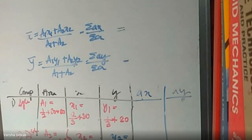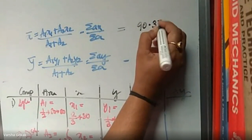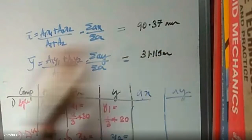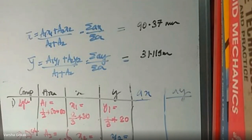After calculation, x̄ = 90.37 mm and ȳ = 31.11 mm. Using the calculator correctly — knowing how to enter brackets — is very important; incorrect bracket usage can cost 10–12 marks in the exam.